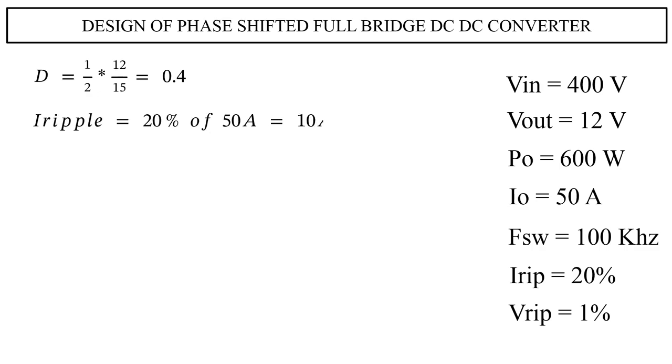Current ripple is equal to 20% of 50 amperes, that is 10 amps. Now substitute all these values in the inductor equation. Then L equals 3 times 0.4 times 1 divided by 100 kilohertz, all divided by 10 amps, that is equal to 1.2 microhenry.